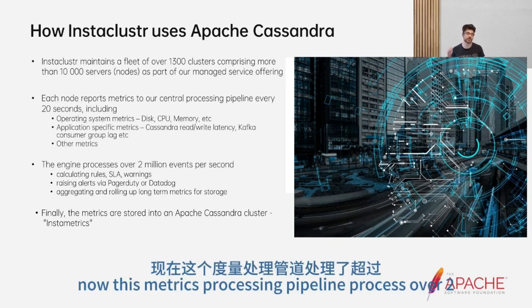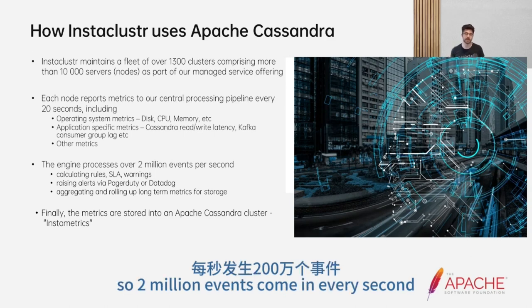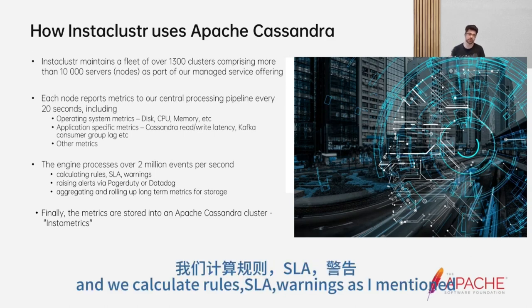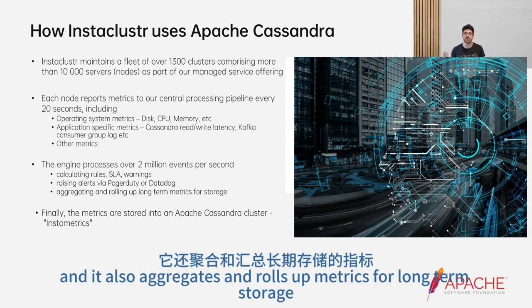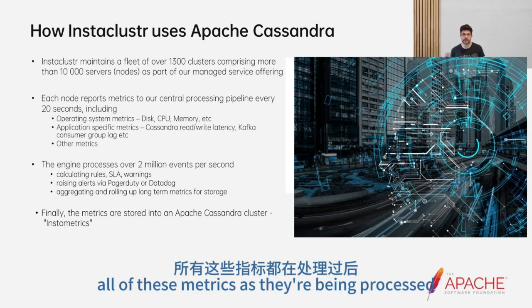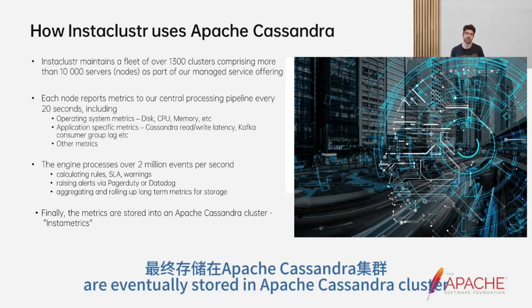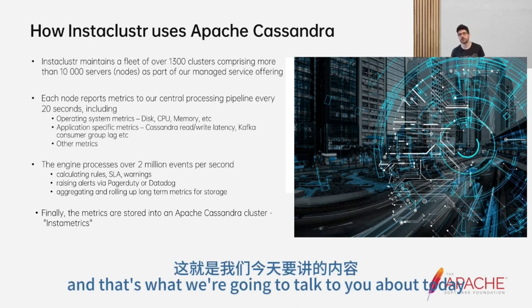These metrics are used internally by our automated tools, which raise alerts and warnings and generally advise our technical operations team of the health of every node and cluster under our management system. This metrics processing pipeline processes over 2 million records a second — 2 million events come in every second and we calculate rules, SLAs, warnings, raise alerts via PagerDuty and Datadog, and aggregate and roll up metrics for long-term storage. All of these metrics are eventually stored in an Apache Cassandra cluster that we call internally InstaMetrics.